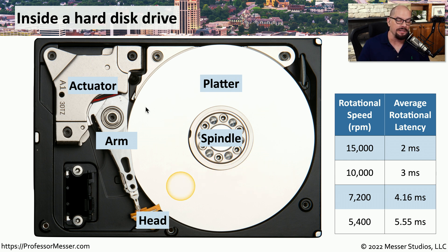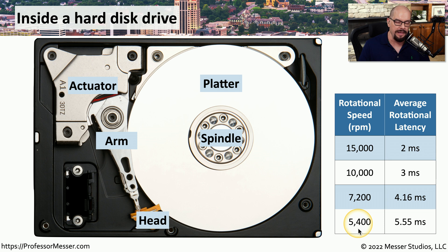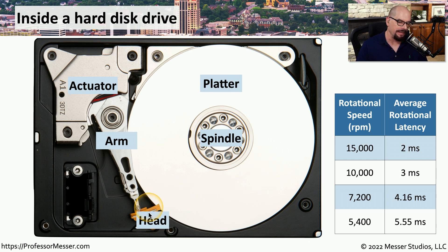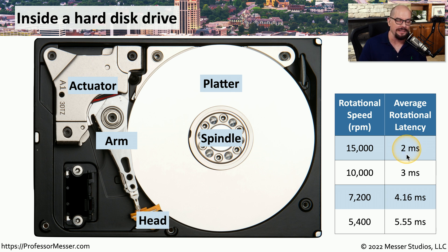These platters can spin at different speeds, and the faster they spin, the faster you'll be able to retrieve the data. For example, a common rotational speed for a low-end hard drive is 5,400 rotations per minute, giving a rotational latency of about 5 and a half milliseconds. This means we have to wait for the data to eventually make its way back to the head to either read or write. If the drive spins faster — for example, at 15,000 rotations per minute — then the rotational latency lowers to about 2 milliseconds. So the faster you spin the drive, the faster you'll be able to read or write the data.